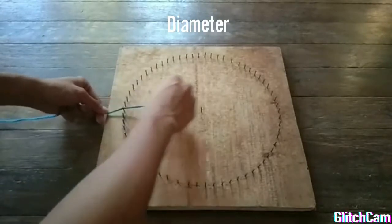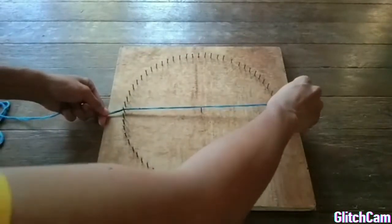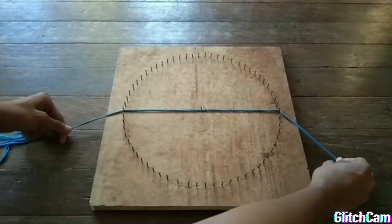First is diameter. A diameter of a circle is a straight line segment that passes through the center, whose endpoints lie on a circle, and it is the longest chord of the circle.